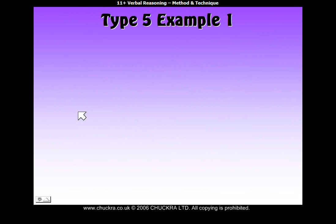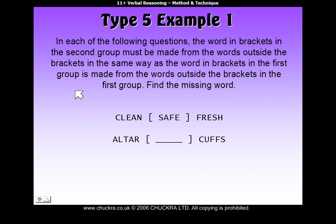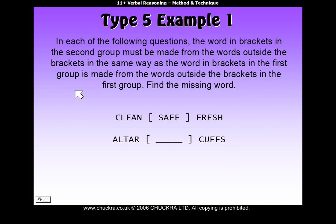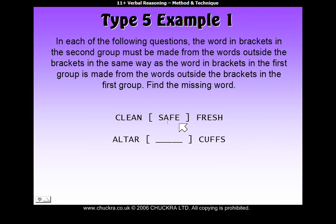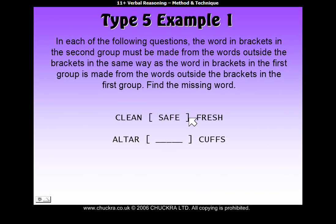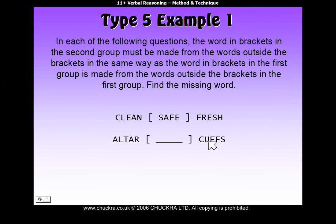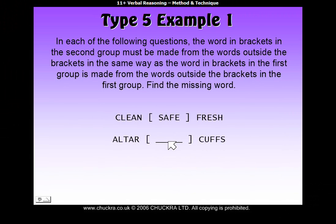Let's have a look at Type 5. In each of the following questions, the word in brackets in the second group must be made from the words outside the brackets, in the same way as the word in brackets in the first group is made from the words outside the brackets. Find the missing word. The word 'safe' has been made up in some way from letters from 'clean' and 'fresh' — the words outside the brackets. Once you've found which letters have been used, you use letters in the same positions from 'alter' and 'cuffs' to make your answer.